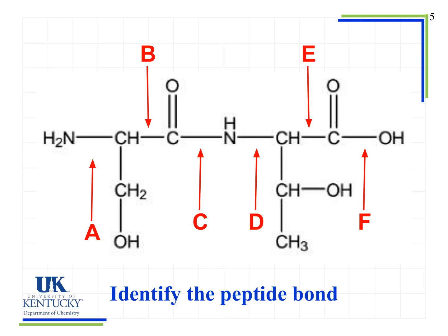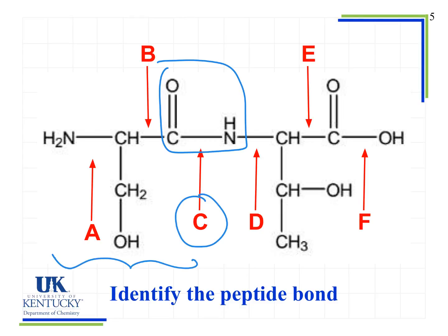Here we have a different dipeptide and you need to identify the location of the peptide bond — the place where those two amino acids came together to form the single dipeptide. Hopefully you recognize that C is the correct answer. Notice we have our amide group here — a carbonyl attached to a nitrogen — and this is where the bond formed between the two amino acids. On the left side is one amino acid, and on the right is another. Notice that the side chains are not involved in those backbone bonds; the side chains will always remain side chains in the peptide.